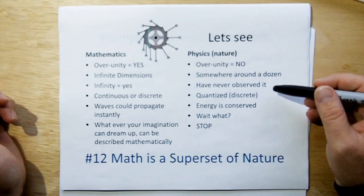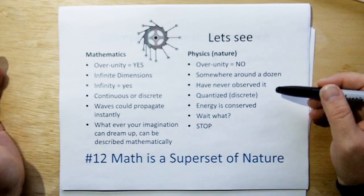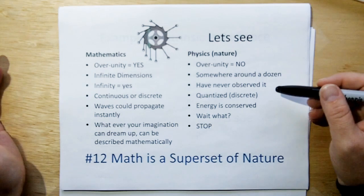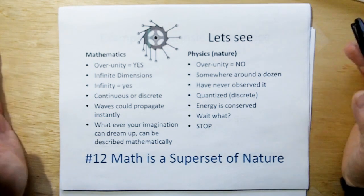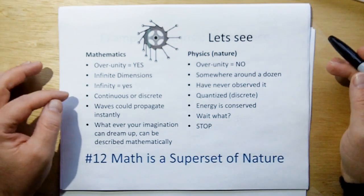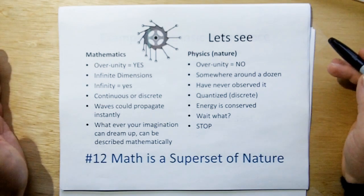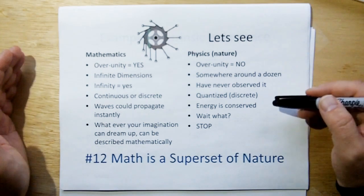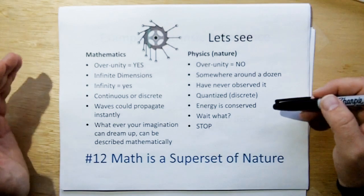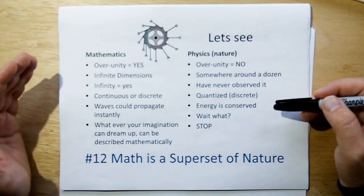In mathematics, you have infinity. In nature, the universe might be infinite, but we've never really observed it, so we don't really know for sure. In mathematics, you can describe a system as either continuous or discrete, but in nature, we kind of think everything is quantized by charge.